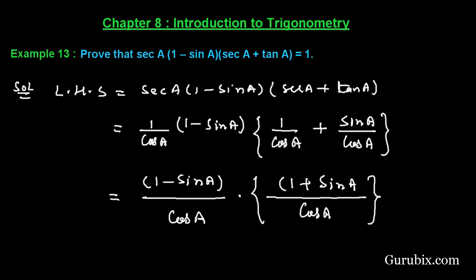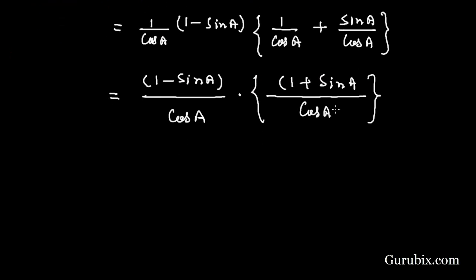And in numerator now we can apply the formula that is (a - b)(a + b) = a² - b². So in numerator we have 1 - sin² A.